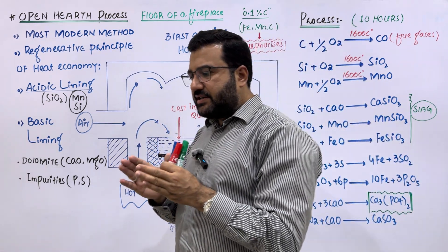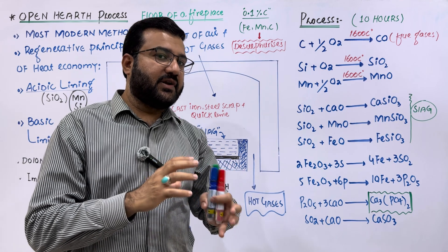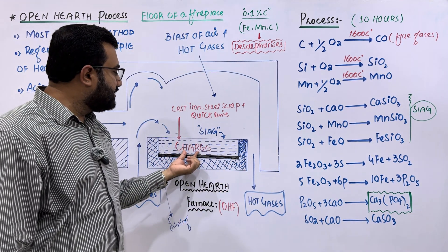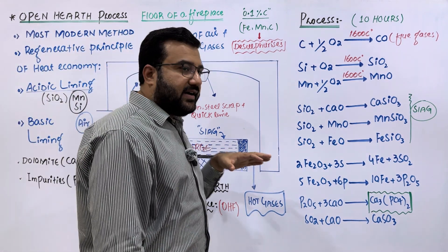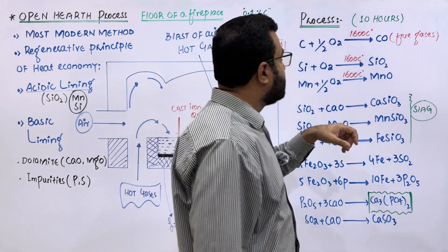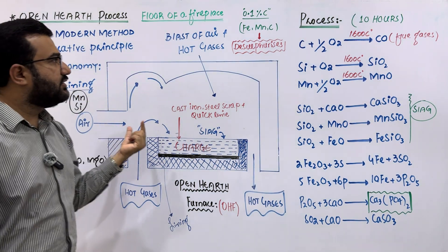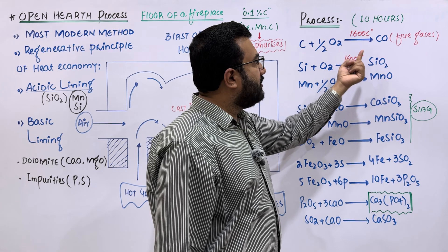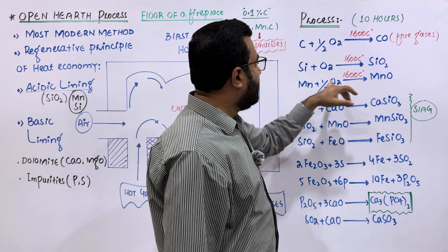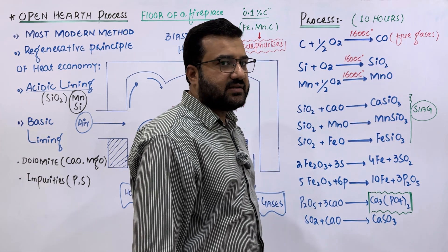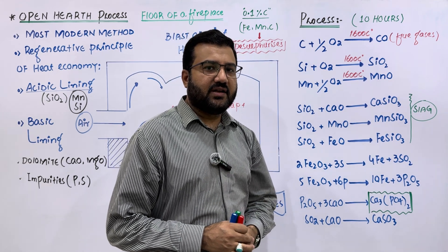Once the light charge is melted, the heavier charge — the pig iron obtained from the blast furnace — is introduced into the molten light charge. Once the pig iron is introduced, the chemical reactions start at 1600°C. The atmospheric oxygen in the air oxidizes the impurities: carbon is changed to carbon monoxide, which exits in the flue gases; silicon is oxidized to silica; and manganese is oxidized to manganese oxide.